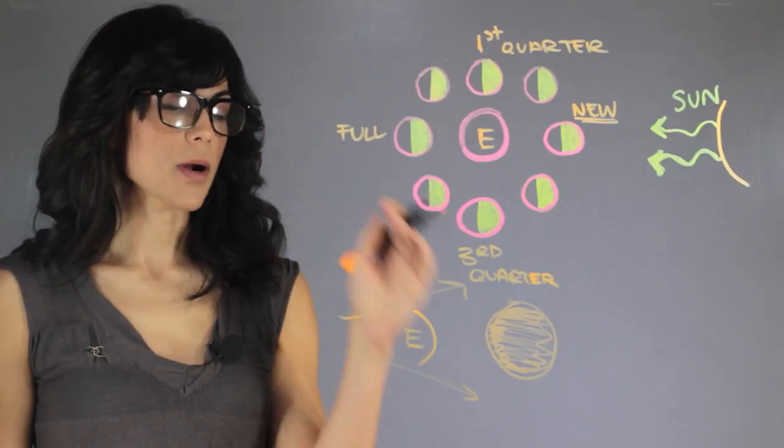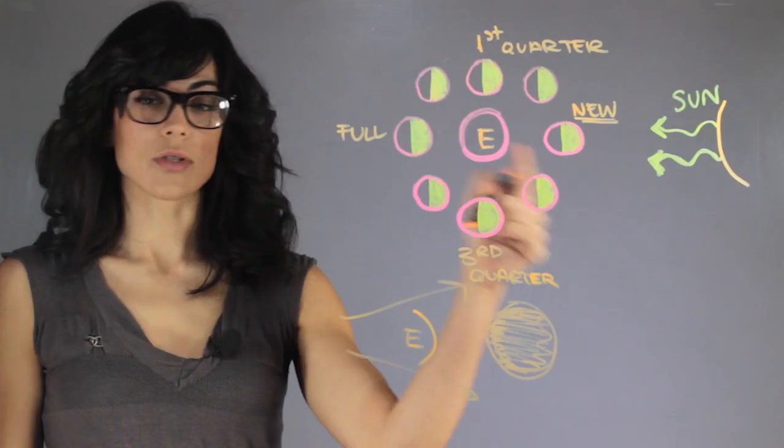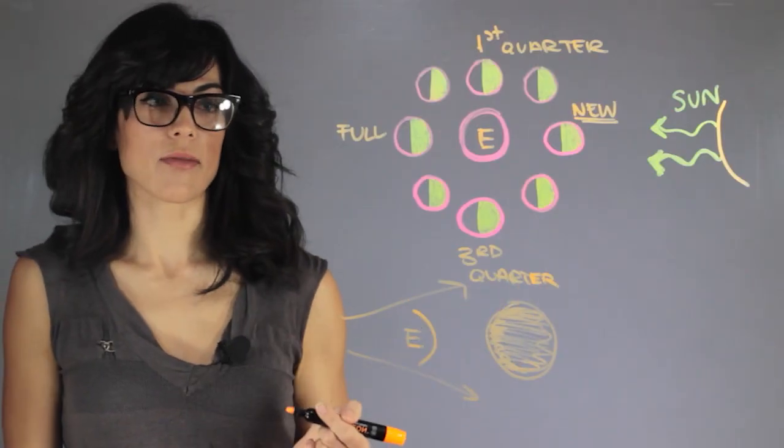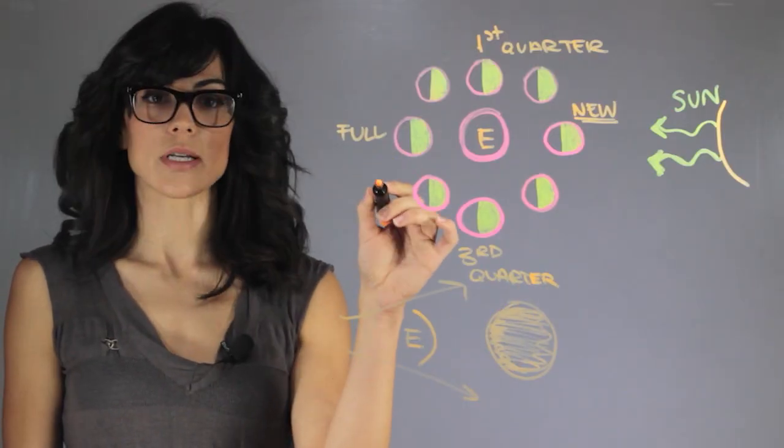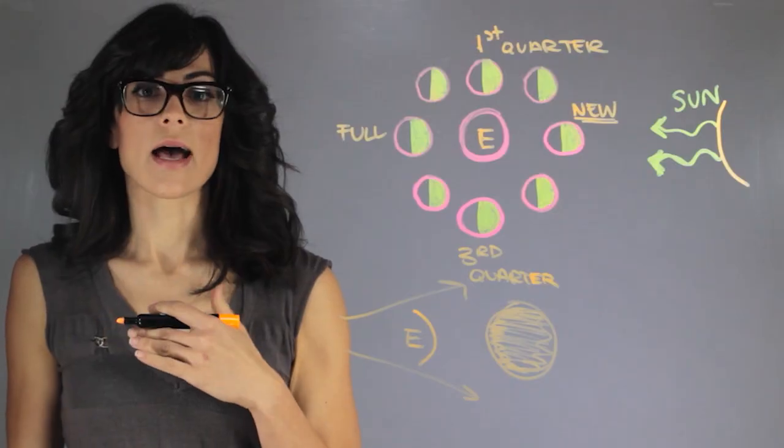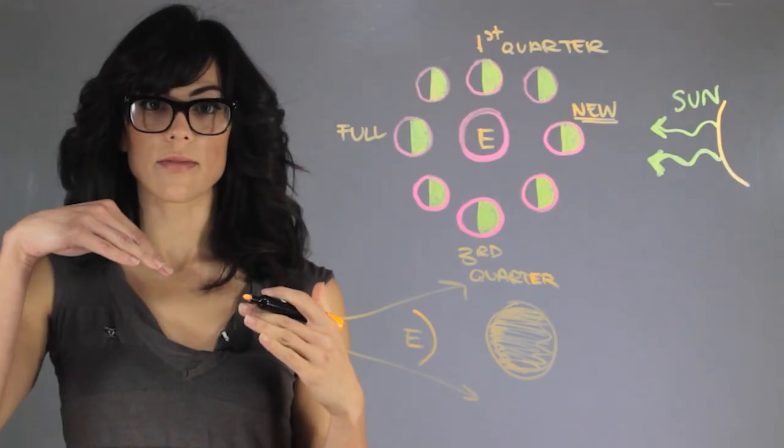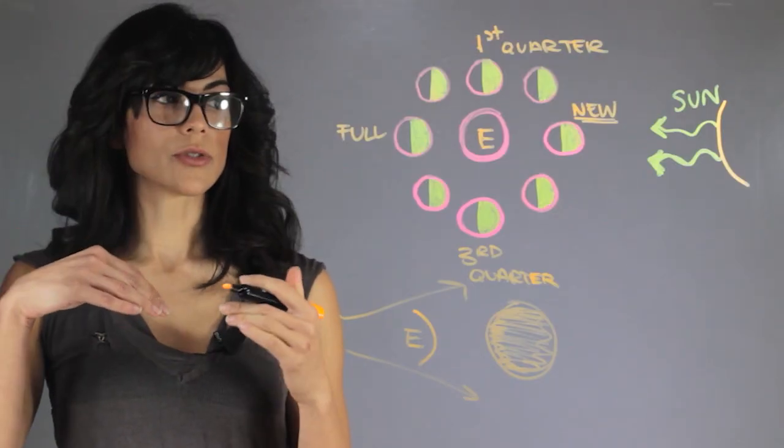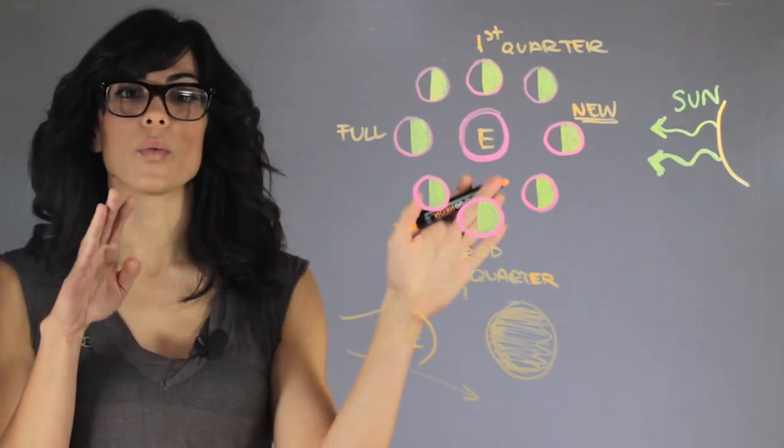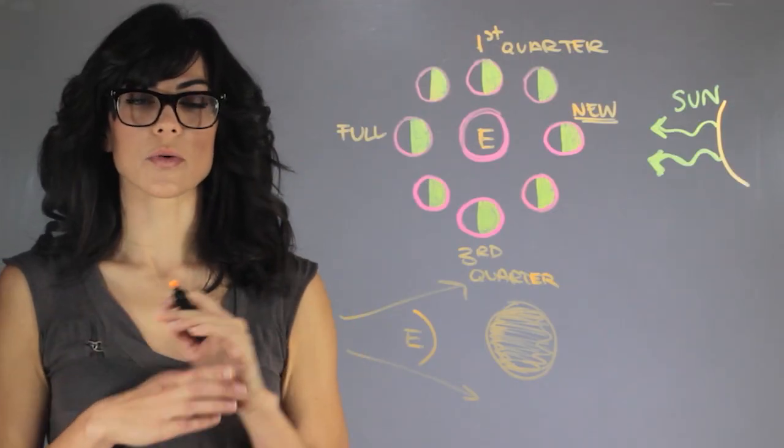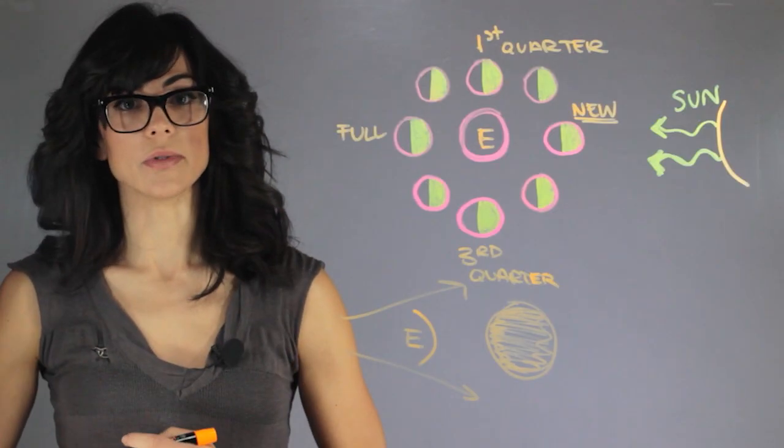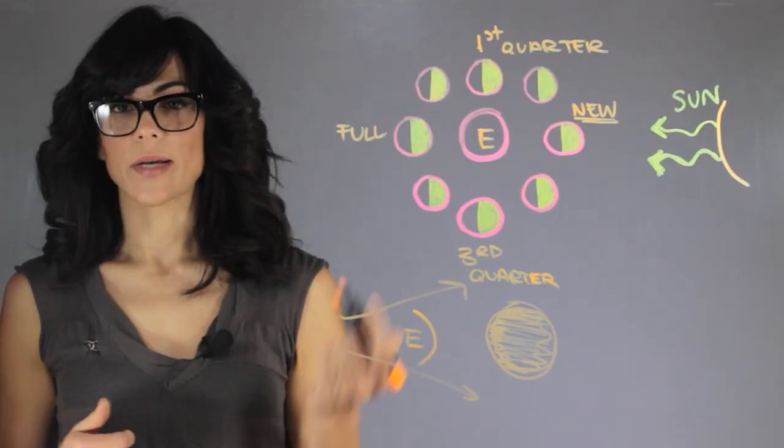Now the problem here is that this doesn't happen every month. So why doesn't it happen every month? It's because the moon is not in the same orbital plane as all of us. So it's five degrees higher. Because of this inclination, we don't block out the light all the time. So we don't cast our shadow on the moon every single month, every time we have a full moon.